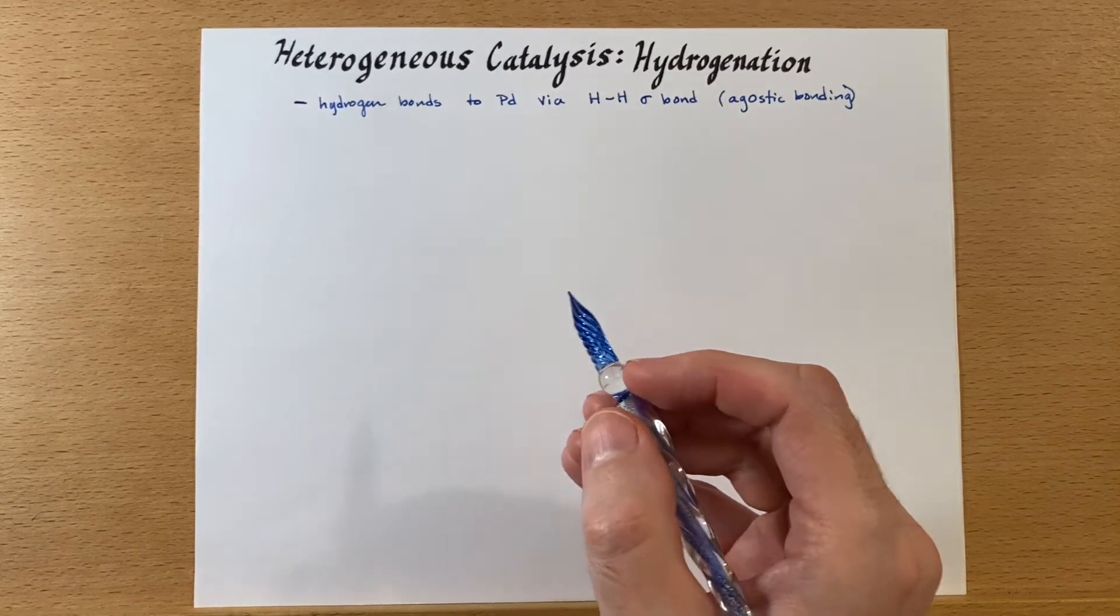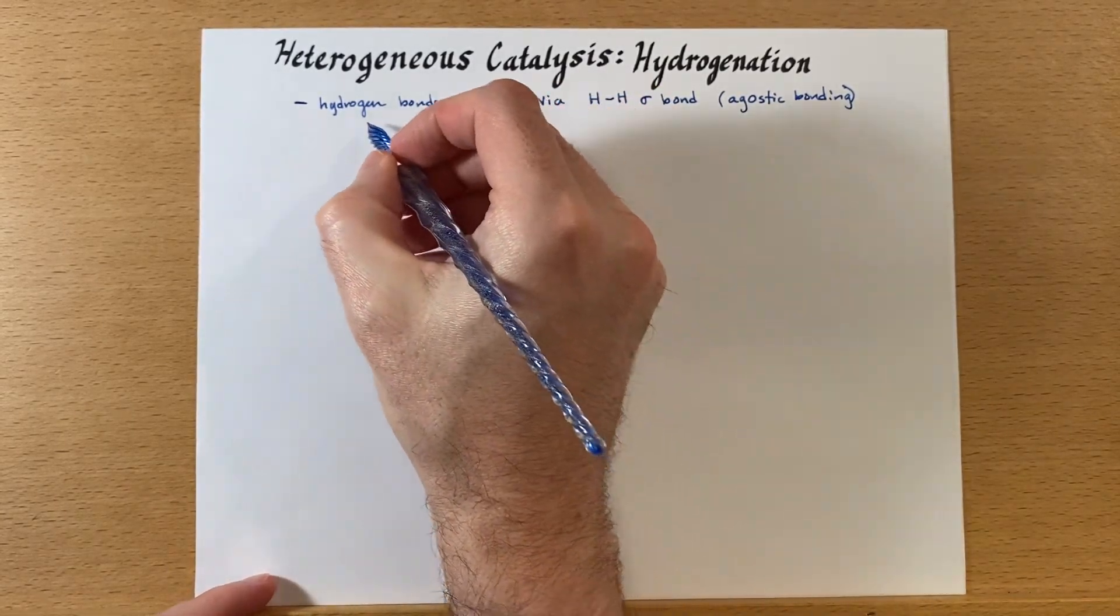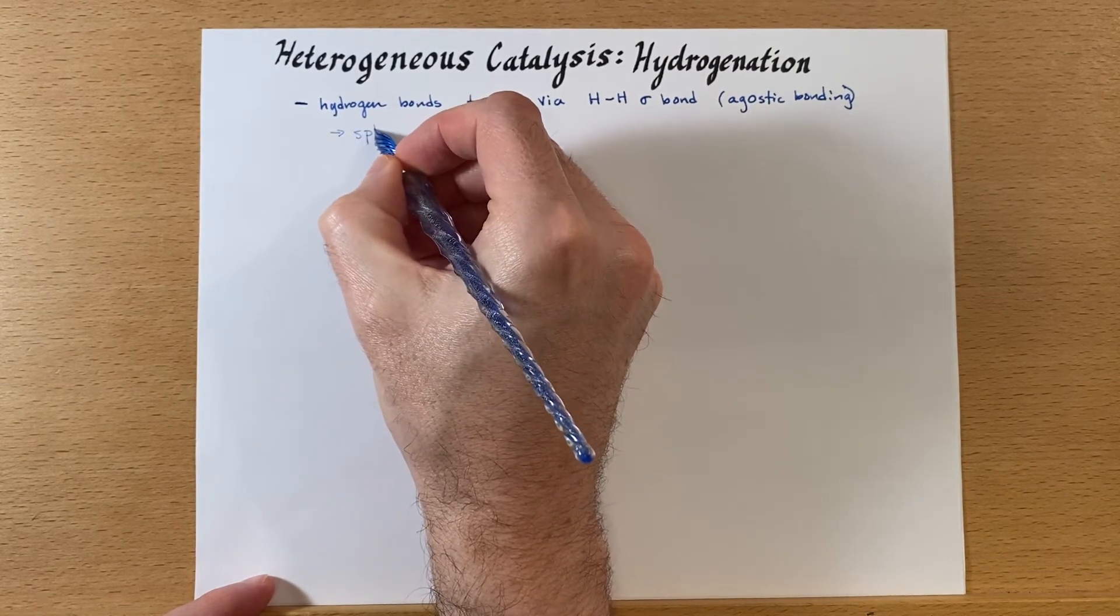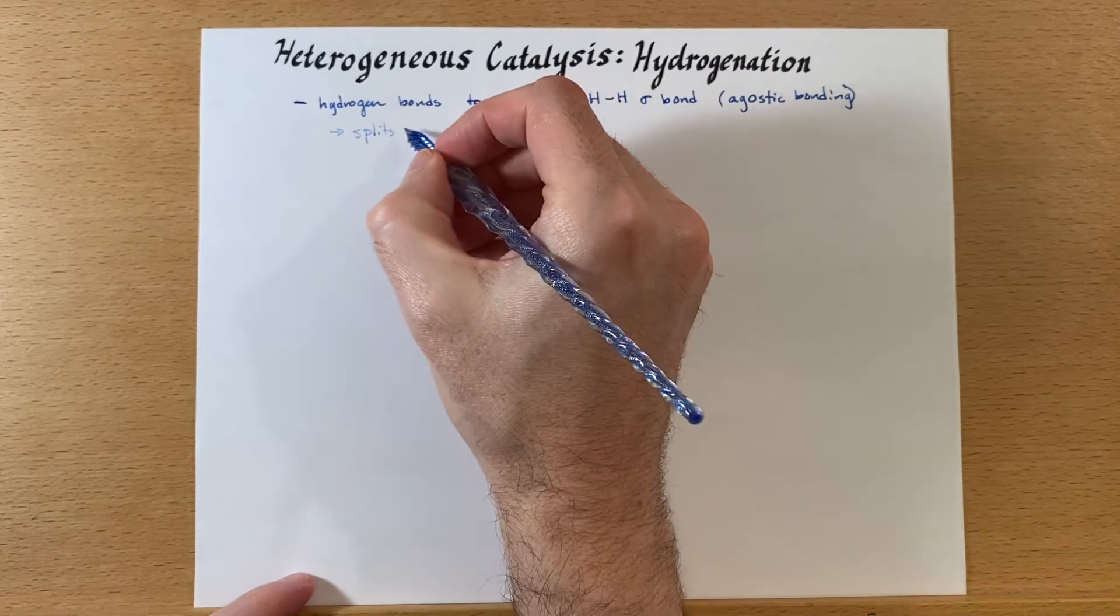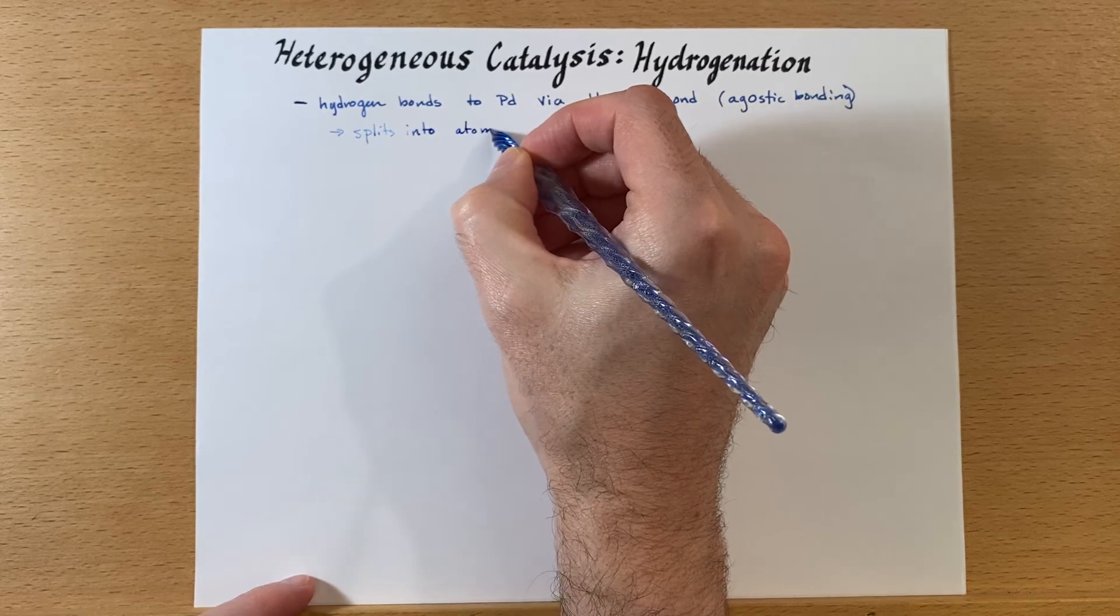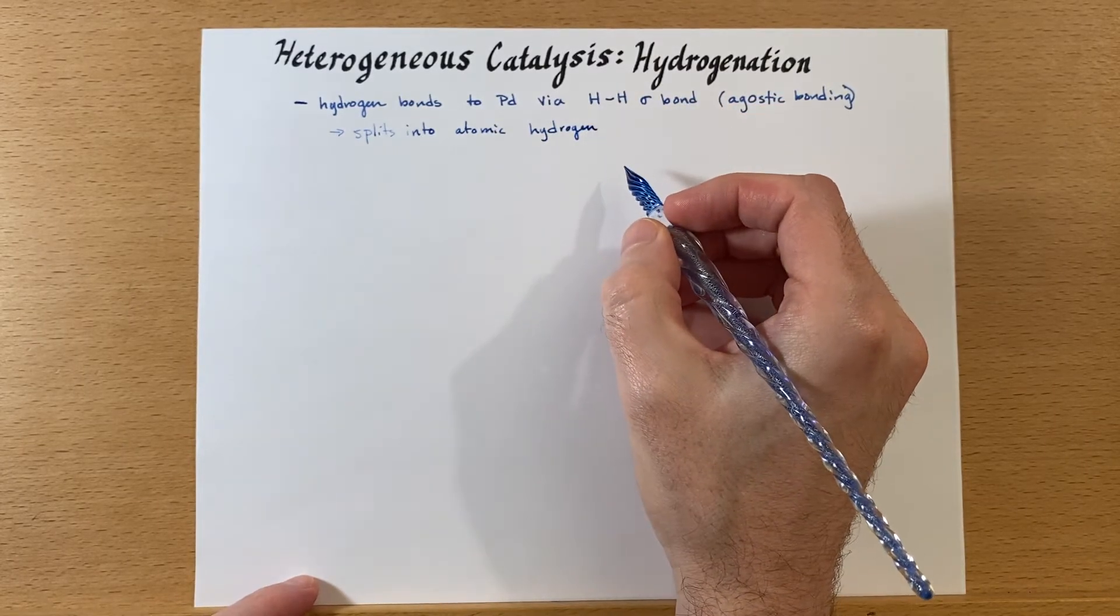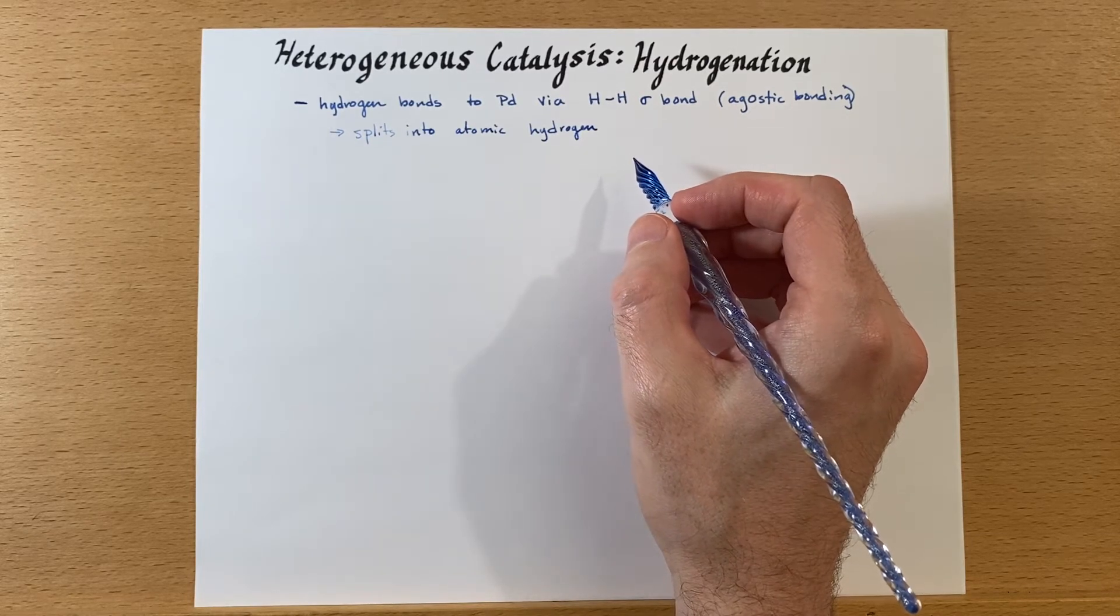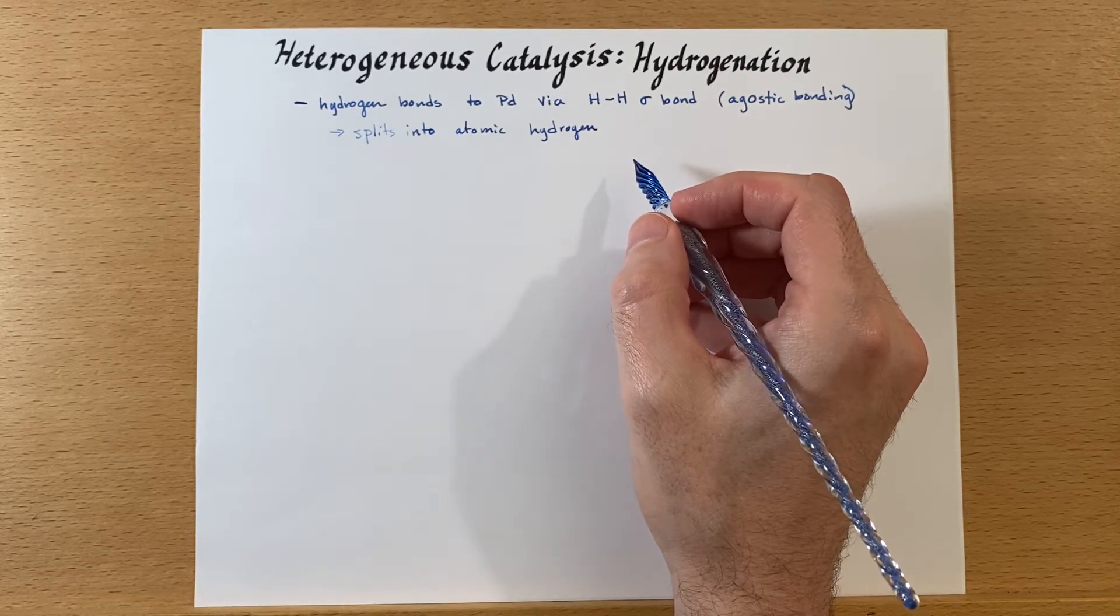Once this happens, hydrogen will split into atomic hydrogen. A very low amount of energy is required for this to happen. It's been shown to happen at 37 Kelvin, that's pretty cold.